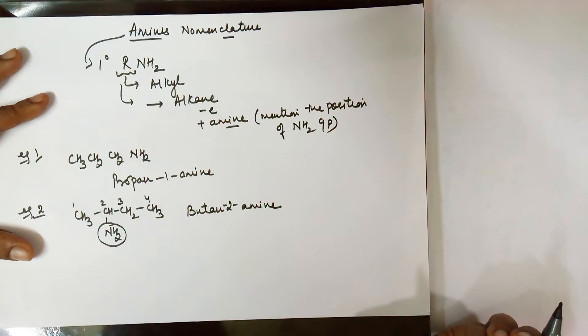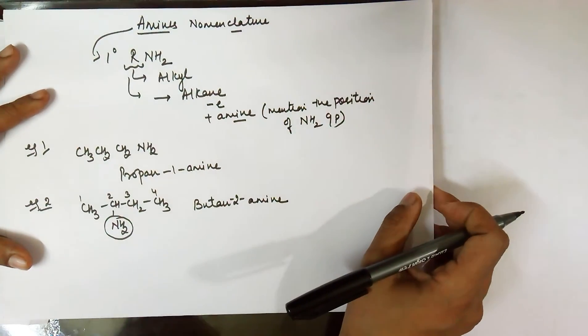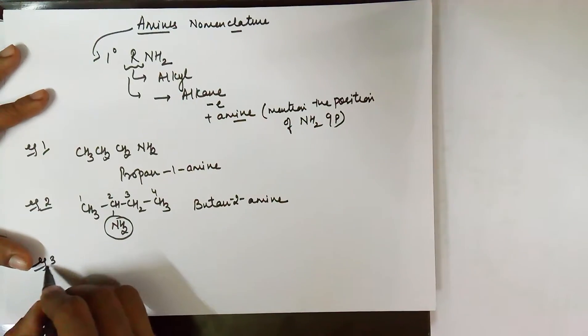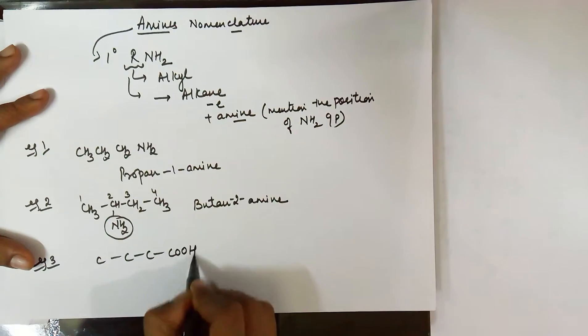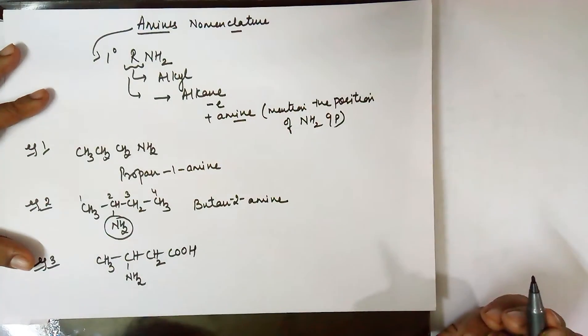Similarly, in case your amine group is present with a higher priority group, let me take the top priority group as carboxylic acid. Then that's the top priority group. My NH2 group is here. Let me complete the hydrogens for this particular structure. The total number of carbons still remains 4, but you've got two functional groups: a carboxylic acid and an amine.